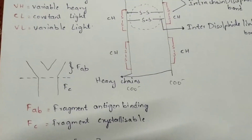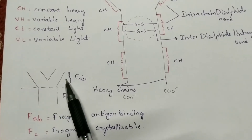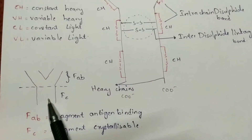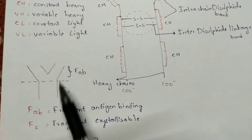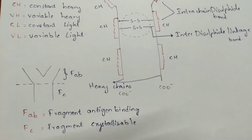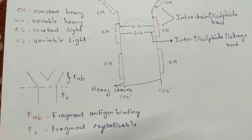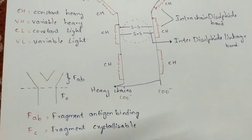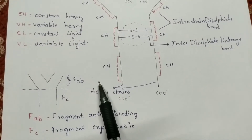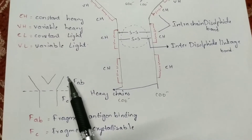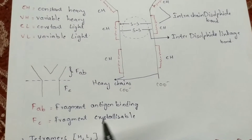The structure of the immunoglobulin is divided into two parts: the upper part is called the FAB end and the lower part is called the FC end. FAB stands for fragment antigen binding, and FC stands for fragment crystallizable. The FAB end is the region where the antigen binds. When an antigen is received by the immune system, antibodies are released and the antigen binds at the FAB end.